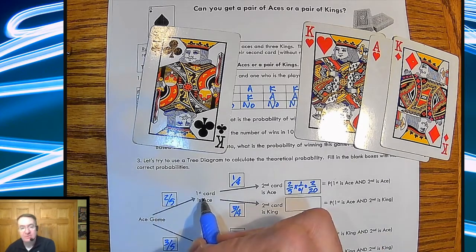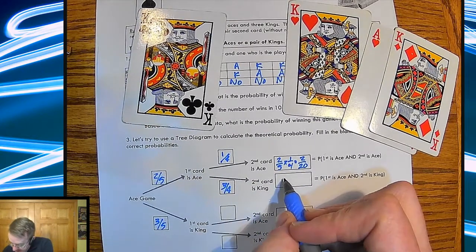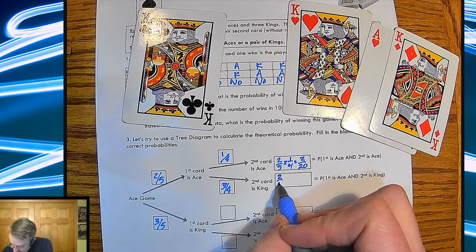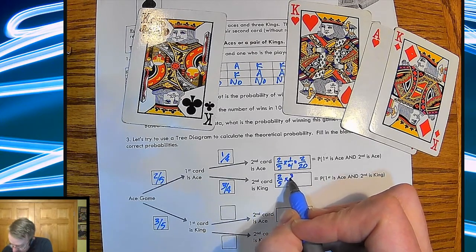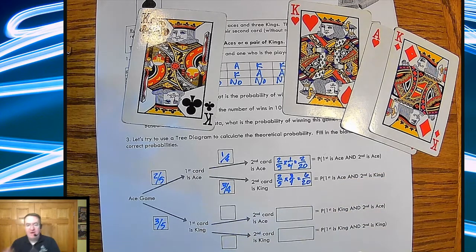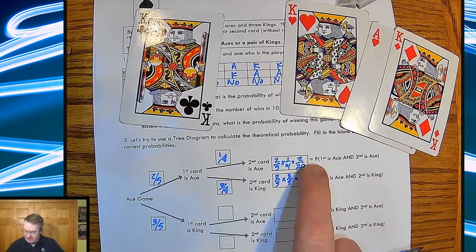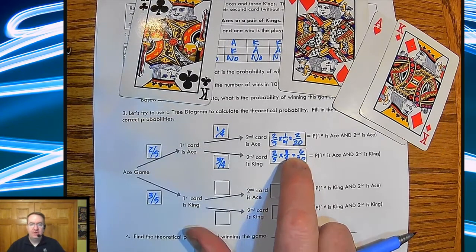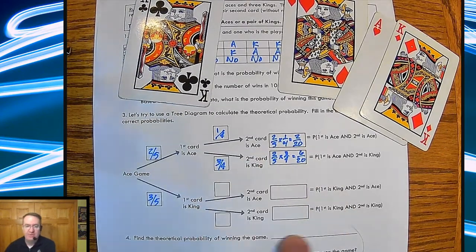If I go this route, if I get an ace first and then a king, that is going to be two fifths times three fourths, you get six out of twenty. Now oftentimes somebody will ask, 'Well wait a second Mr. Hayes, these don't add up to be one,' and you're right, but we still have this bottom part of the tree to go through and do.